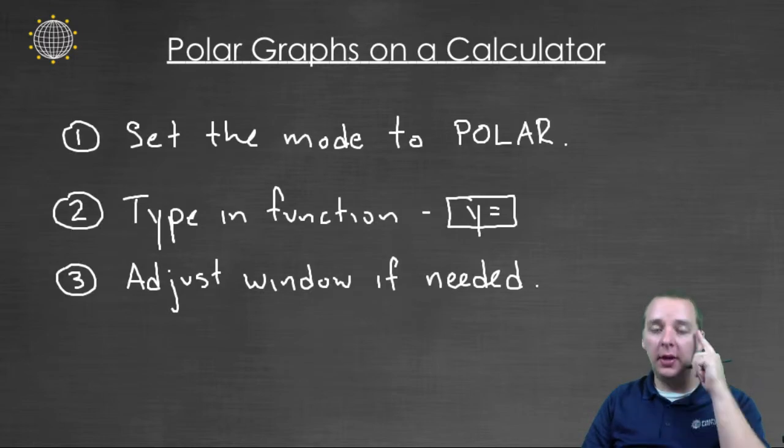So the steps are pretty straightforward. The big thing is you just have to change your calculator mode from function mode to polar mode, which we'll do in just a minute. I'll pull up my calculator and show you. Once that's done it's pretty self-explanatory. You go to y equals and type in your function that you want to graph, whether it be a cardioid or a rose curve or something like that, and then graph it and then adjust your window if you need to.